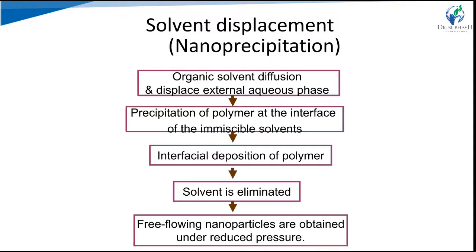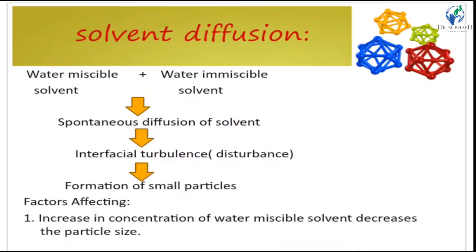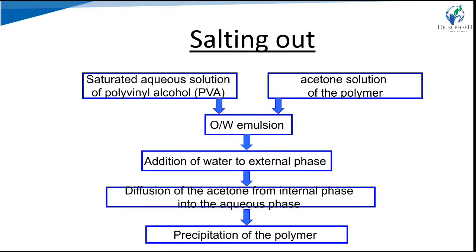In solvent diffusion, a saturated aqueous solution of PVA and organic solvent such as acetone in which the polymer is dissolved are emulsified, forming an oil-in-water system. Addition of water to the external phase causes diffusion of acetone from the internal phase into the aqueous phase, resulting in precipitation as the salting-out approach. Increasing the concentration of water-miscible solvent decreases the particle size.